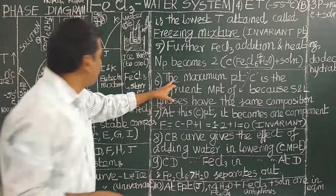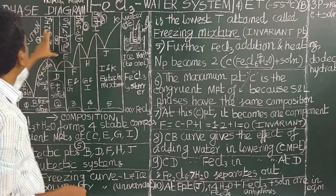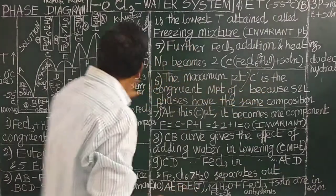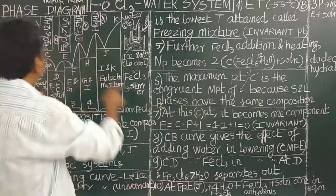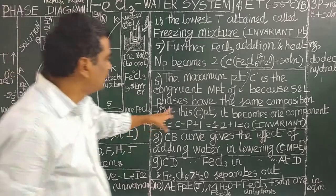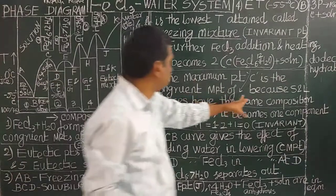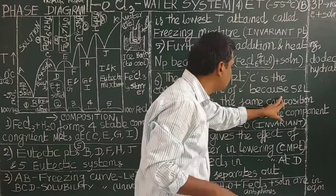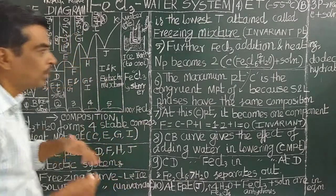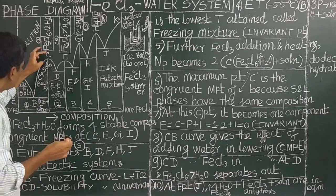The maximum point C — along with E, G, and I — corresponds to stable compound formation and is called a congruent melting point. At the congruent melting point, solid and liquid phases are present and have the same composition. That is why it is called congruent — meaning the solid and liquid have the same composition.